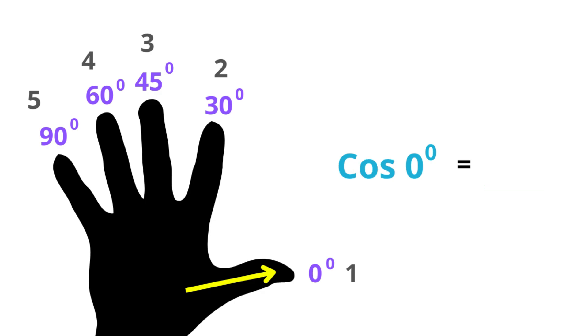Let's find the cosine of 0 degrees. This side is for cosine and there are 4 fingers. Now we take the square root which is 2 and divide it by 2. So it's 1.